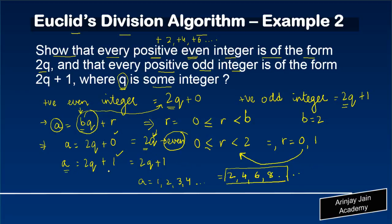As against this, if a = 2q + 1, because 2q is even, whenever we add 1 to it, we always get an odd integer. And because q is positive, this is always a positive odd integer.